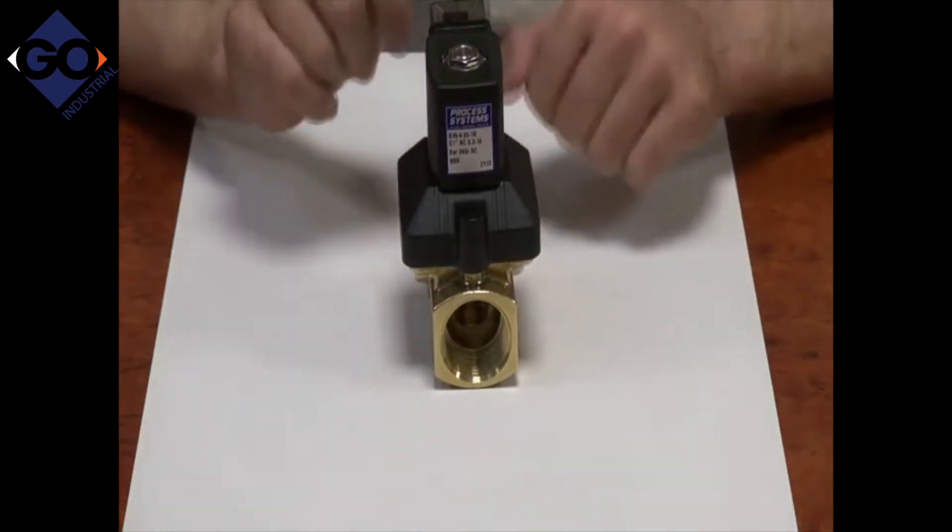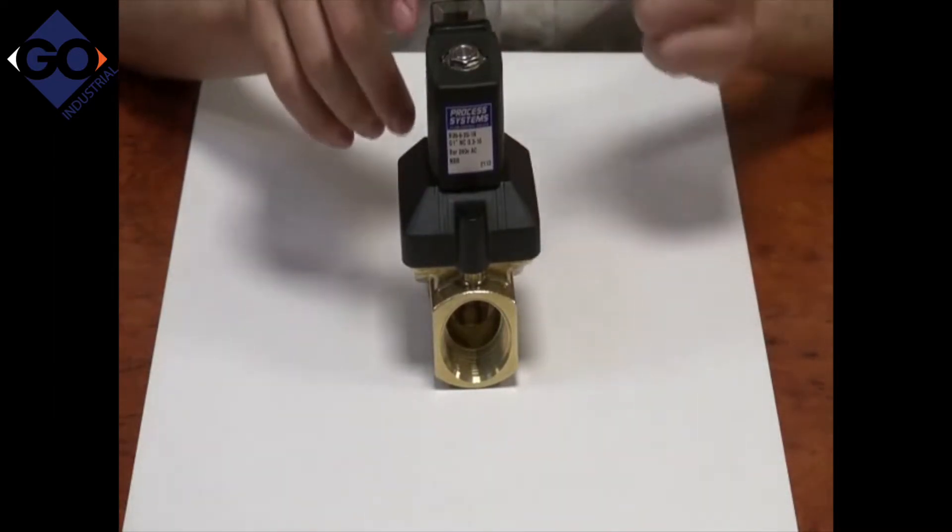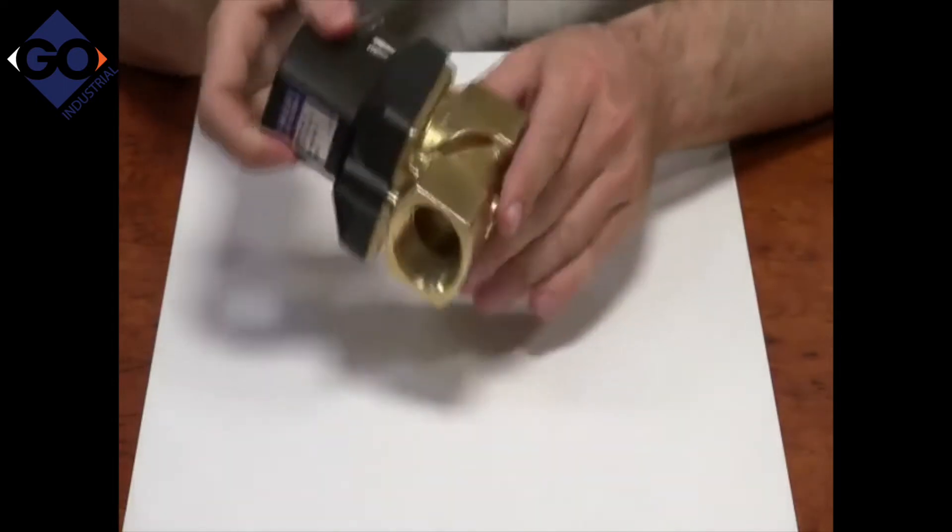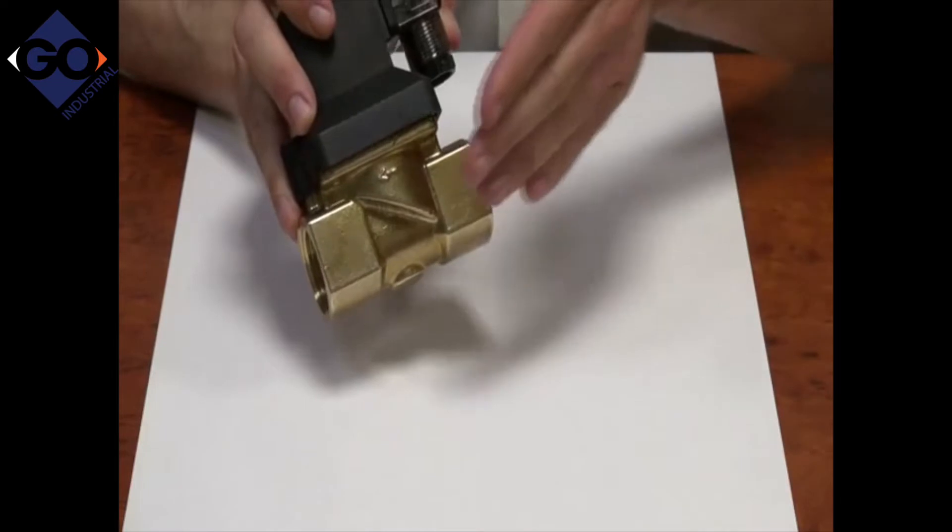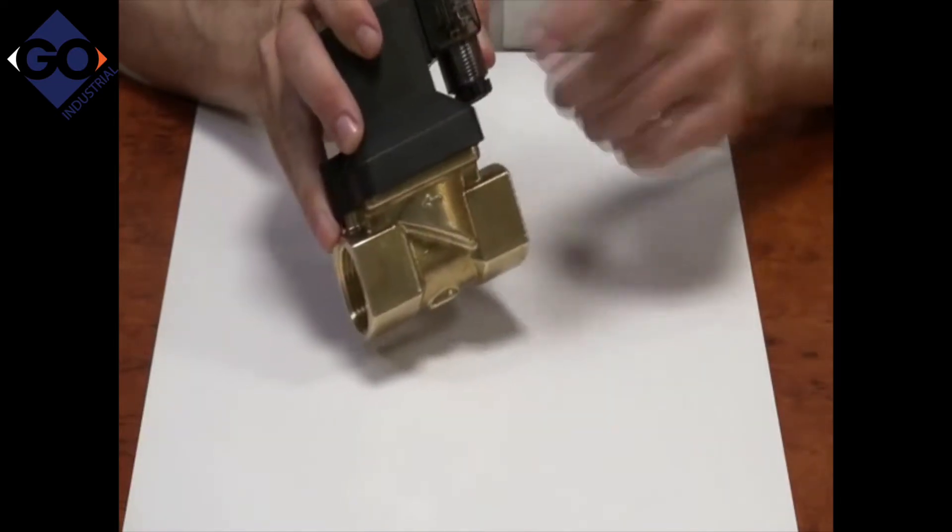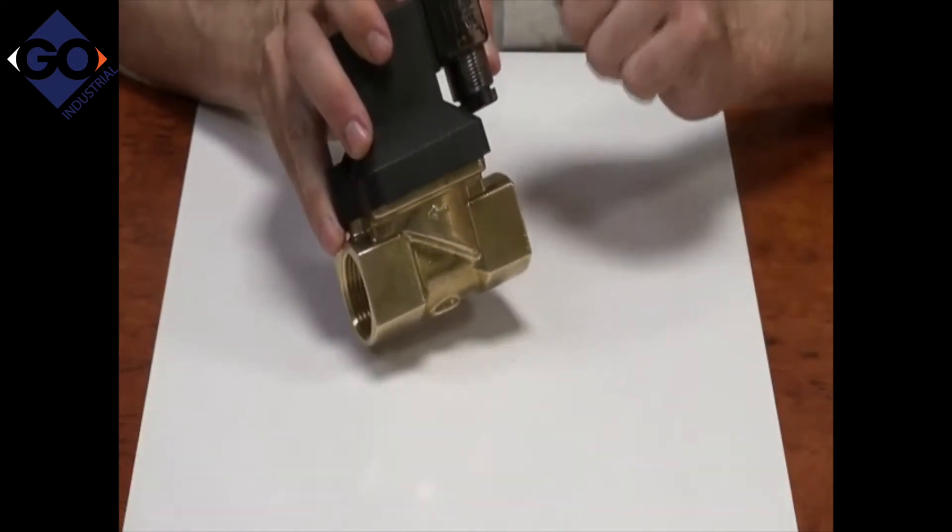Another important feature when installing this valve is the direction of flow. If you look on the side of the valve, it has an arrow. This is the flow direction, inlet to outlet. If you put it around the other way, the valve will leak and won't work.